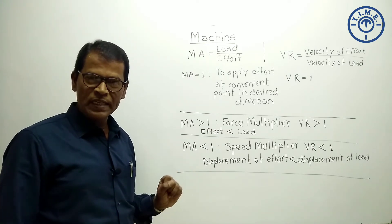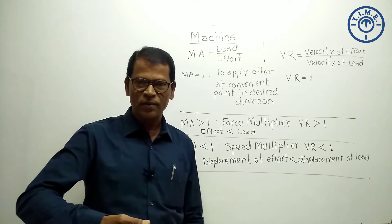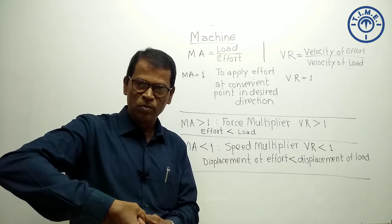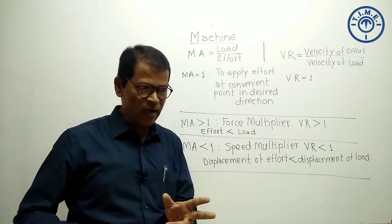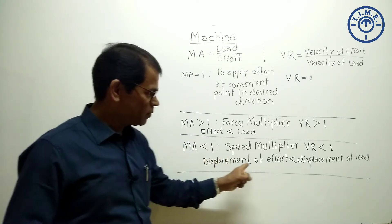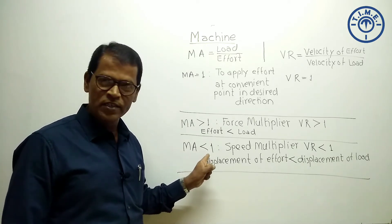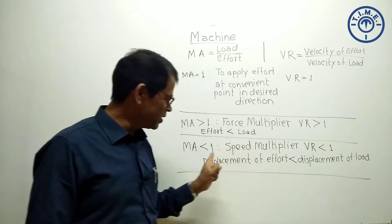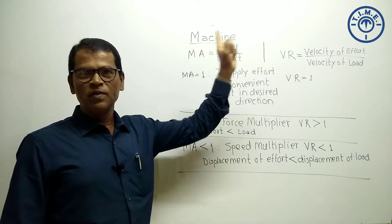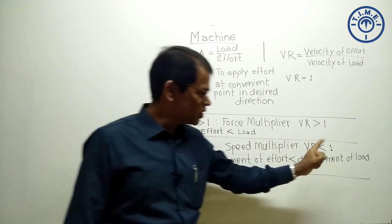Third case: when mechanical advantage is less than 1, it means effort applied is more than the load. If you are using a scissor, it is hard to apply force at the handle end; applying more force at the handle over a small displacement means the blades cut the cloth over a larger length. The displacement of effort is less than the displacement of load. In this case, the scissor is a machine whose mechanical advantage is less than 1 and it works as a speed multiplier, and velocity ratio is also less than 1. Remember: when MA = 1, VR = 1; MA > 1, VR > 1; MA < 1, VR < 1.